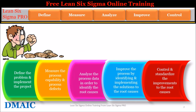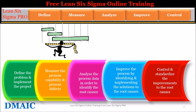Define is the first step of the DMAIC process. In this phase, we define the problem and implement the project. Measure is the second step of the DMAIC process. In this phase, we measure the process capability and process defects at the gemba.